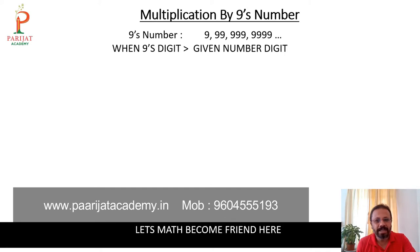Today we are going to learn the second topic of ninth number multiplication type 2 when ninth number digit is greater than given number digits. So what it means? Let's see one with an example: 42 times 9999.